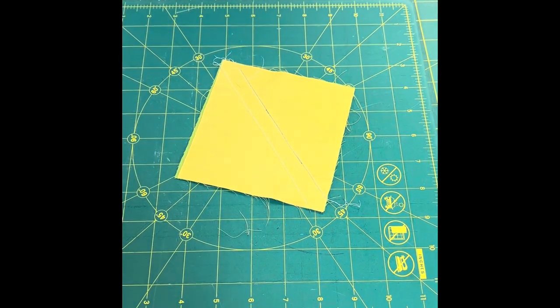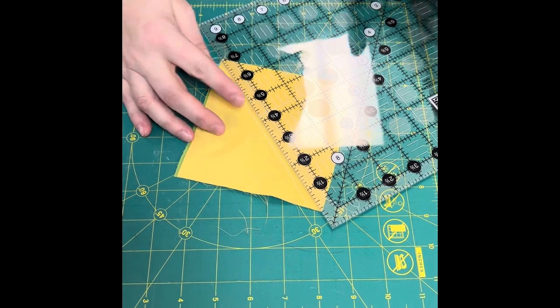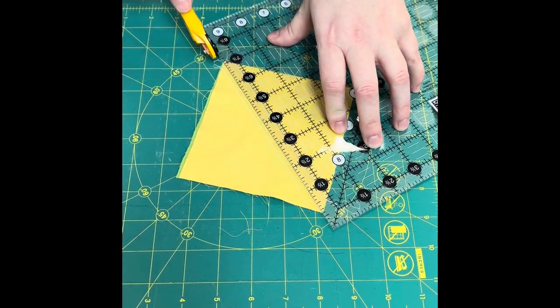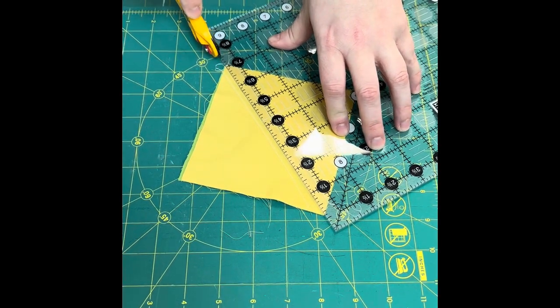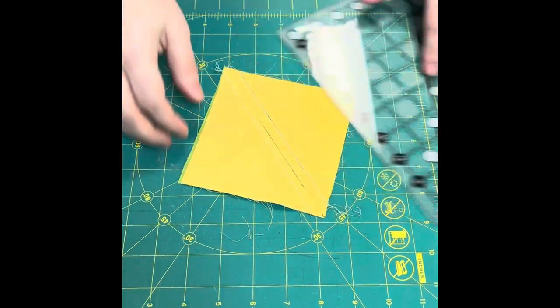Once that's done you can use a ruler going point to point again. I like to use my small rotary cutter for this just because it makes it a little bit easier to make sure that I'm nice and straight. And then I cut.